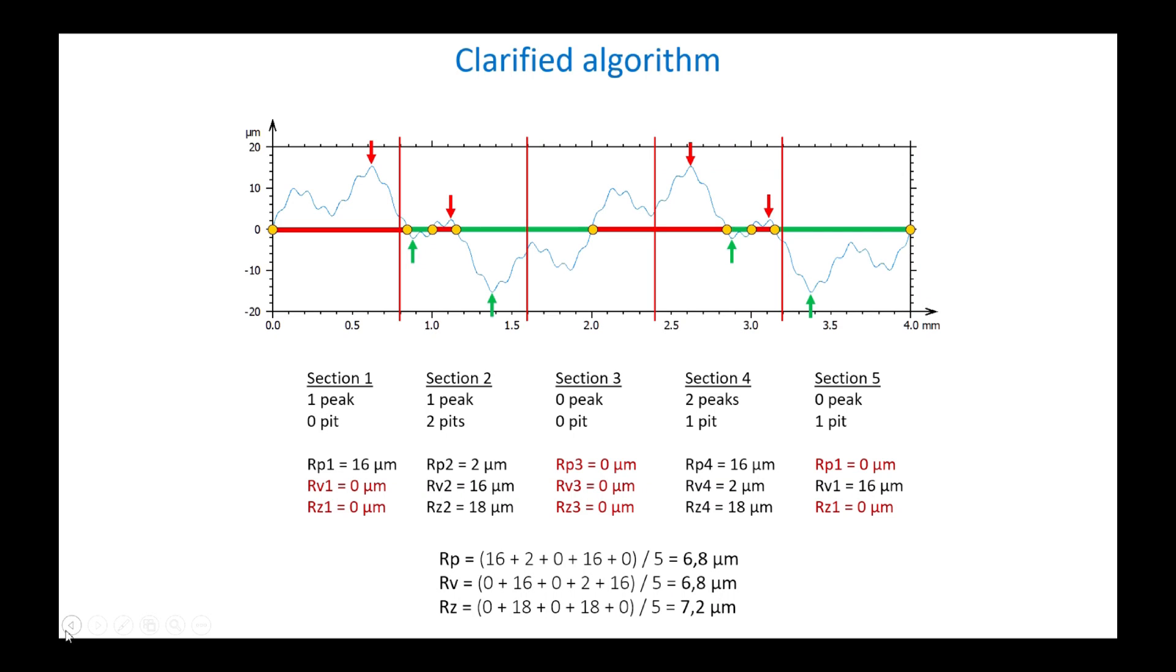However, it must be kept in mind that these parameters, calculated on the primary or roughness profile, are very sensitive to noise and outliers, and are therefore not very robust in an uncontrolled environment.